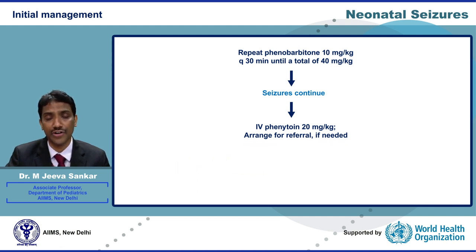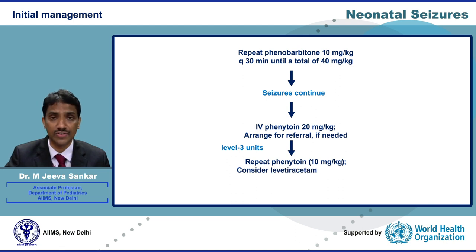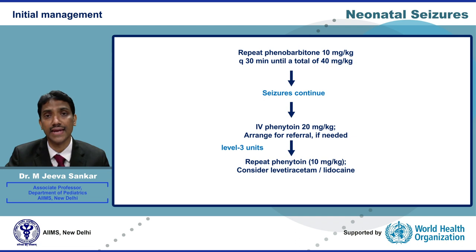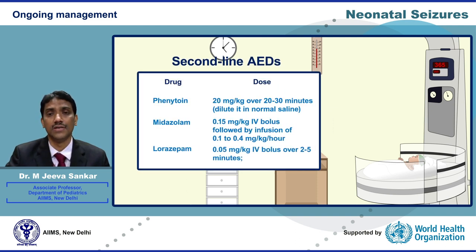Arrangements for referral should be made if the unit is not well equipped for respiratory support. In a level 3 unit with adequate monitoring and ventilation facilities, phenytoin should be repeated at 10 mg per kg for ongoing seizures. If seizures are still not controlled, either levetiracetam or lidocaine can be administered. In some units, levetiracetam is preferred over phenytoin as a second-line drug after 40 mg per kg of phenobarbitone. Other anti-epileptic drugs include midazolam, administered as a bolus of 0.15 mg per kg followed by an infusion of 0.1 to 0.4 mg per kg per hour, and lorazepam. Both midazolam and lorazepam can result in respiratory depression, so avoid using them if ventilation facilities are not available.